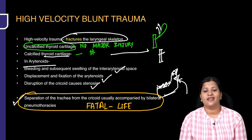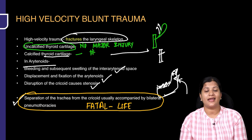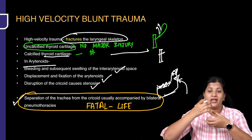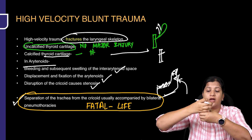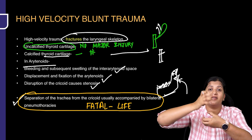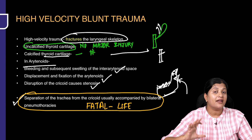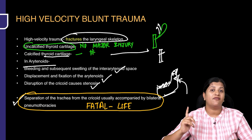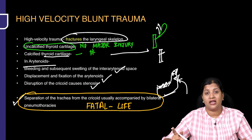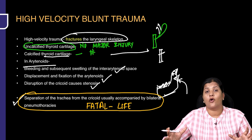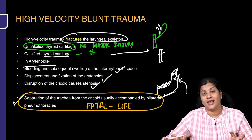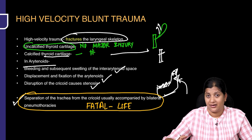In high velocity blunt trauma, the cricoid can get separated from the first tracheal ring, resulting in cricotracheal separation. This is fatal and life-threatening because of the pneumothorax, air leak, and instability of the larynx itself. This is something that must be recognized at the earliest.